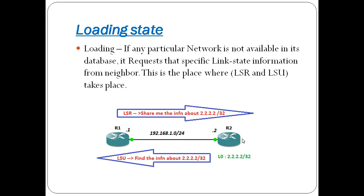Next is the loading state. In the loading state, information is added and routers look for better prefix routes. For example, R2 has a loopback configured as 2.2.2.2/32 and runs OSPF on that network. R1 does not have that prefix, so it sends a link state request packet. R2 then sends back a link state update with the requested information.